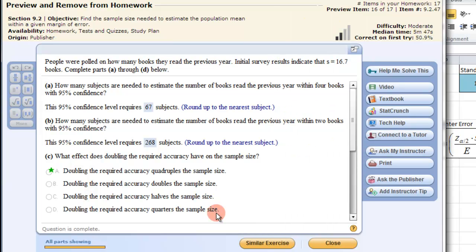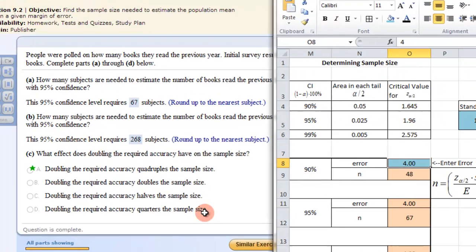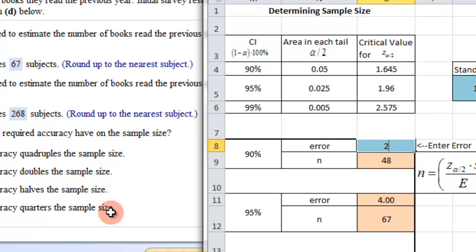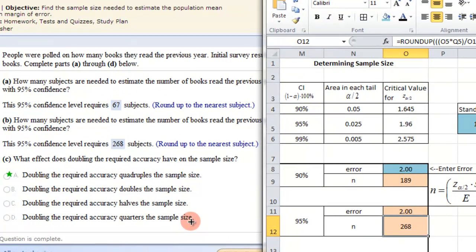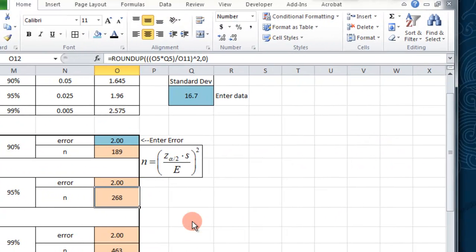The next question says how many subjects are needed to estimate the number of books within two books of the 95% confidence. Well now that we have everything done, we just go up here and change that to two. The 95% confidence now changes, that changes to two as well, and it's 268. So it's quite a difference to have within just two books. So that's how you can also do finding the, determining the sample size with a population mean.